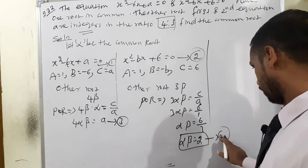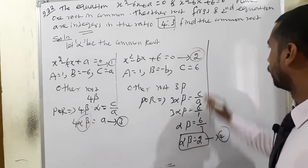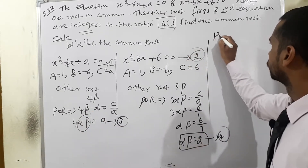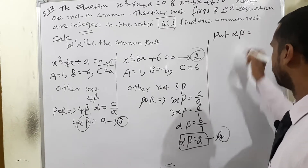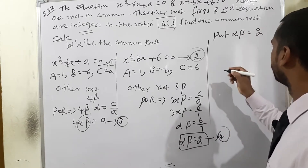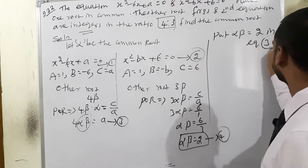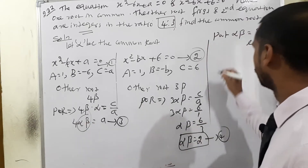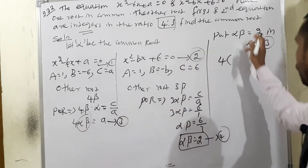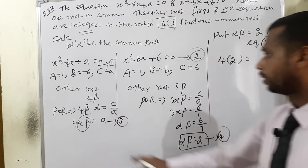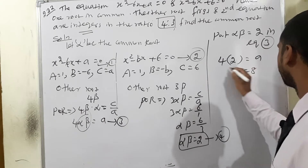Substituting equation 4 into equation 3: instead of alpha·beta, we apply the value 2. So 4 × 2 = a. Therefore a = 8.